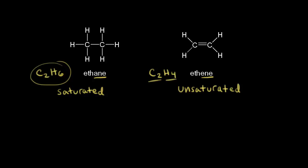Let's look at the carbons present in both molecules, starting with ethane. This carbon is sp3 hybridized, and so is this one. So ethane contains two sp3 hybridized carbons, and we know the geometry around an sp3 hybridized carbon is tetrahedral, so we should have tetrahedral geometry around both of these carbons.